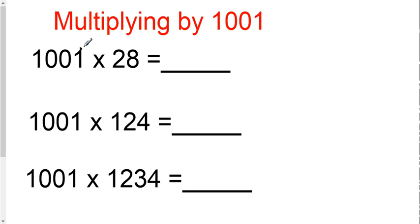This is the multiplying by 1001 trick, which is very similar to the 101 trick. The only difference is you will be writing three digits instead of two digits, as you did in the 101 trick.